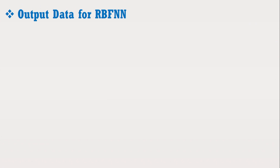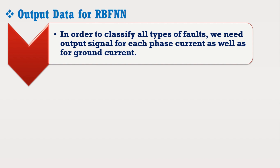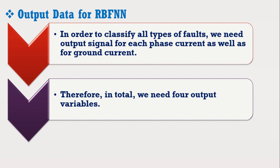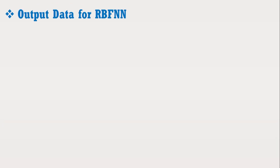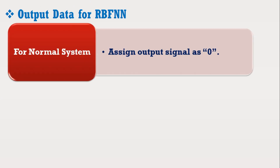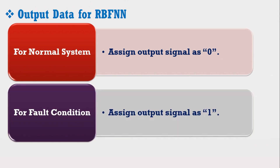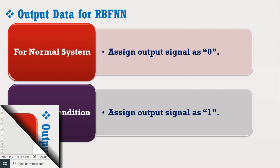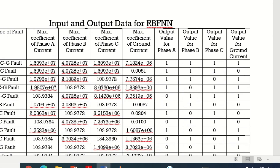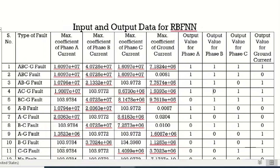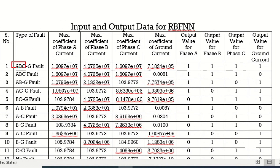In order to classify all types of faults, we need the output signal for each phase current as well as for ground current. Therefore, in total, we need four output variables. In the power system, either the system is normal or subjected to a fault condition. We can represent the normal output condition by assigning 0 and 1 for fault condition to distinguish between the faults. In the first case, it is observed that a 3 phase to ground fault is simulated. Therefore, the output of each phase and ground current will be 1, as shown here.